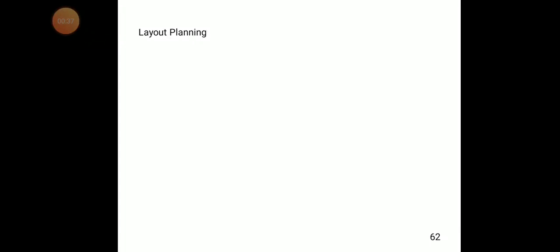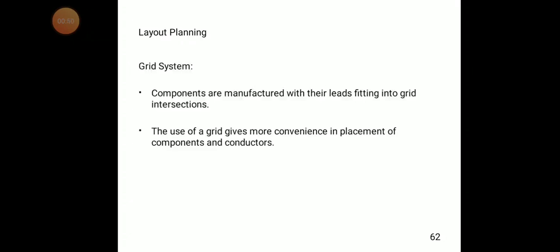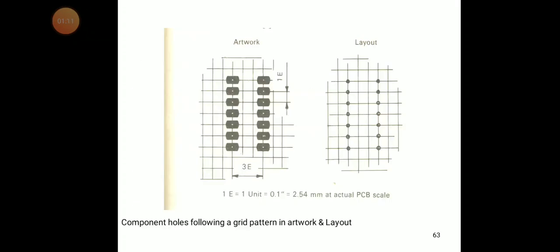Layout planning — how is the PCB layout designed? Generally the layout uses a grid system. In the grid system, components are manufactured with their leads fitting into grid intersections. The use of a grid gives more convenience in placement of components and conductors. You can see the artwork and layout of the grid system, where component holes follow a grid pattern. Using the grid work, we can simply identify where we need to mount the components.